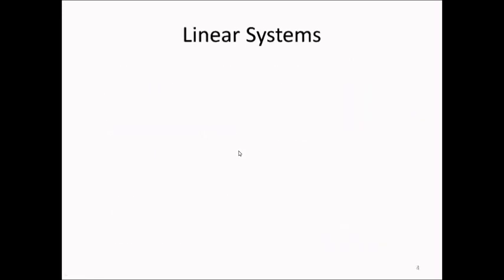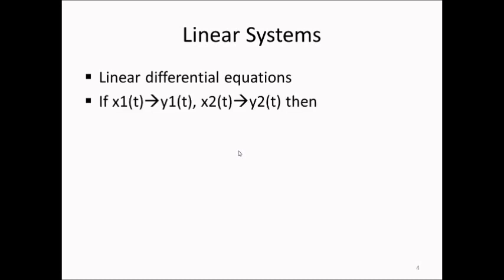A linear system is a system described by linear differential equations. Another way to describe it is through superposition: if input x1 produces output y1 and input x2 produces output y2, then the sum of the inputs x1 plus x2 should produce the sum of the outputs y1 plus y2. This is called superposition, and if the system is linear, superposition holds.